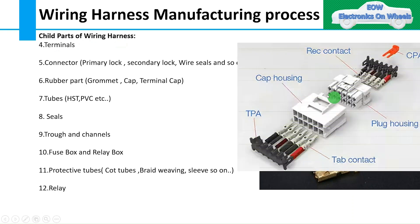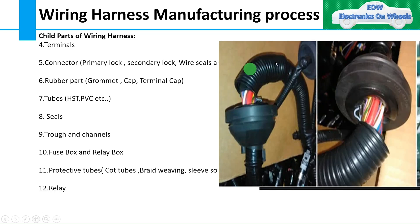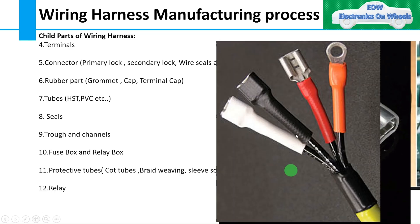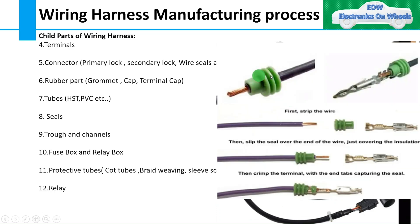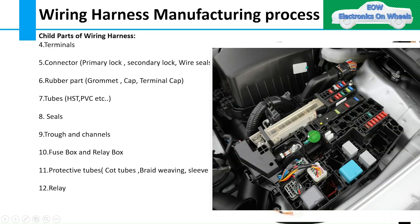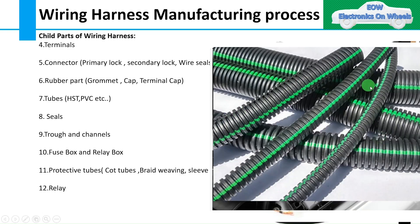Next is connector child parts. We already covered the connector, but connectors also have child parts such as CPA, TPA, wire seal, and so on. The sixth component is rubber parts like grommet, cap, and terminal cap. We also have tubes like HSD and PVC. Moving to the next one — seals. We have different types of seals as well. The ninth component is troughs and channels, which provide fixing and support to the harness at different locations in the vehicle. Then we have fuse box and relay box, which are used to hold fuses and relays. Coming to protective tubes, we have corrugated tubes, braid weaving, and so on.